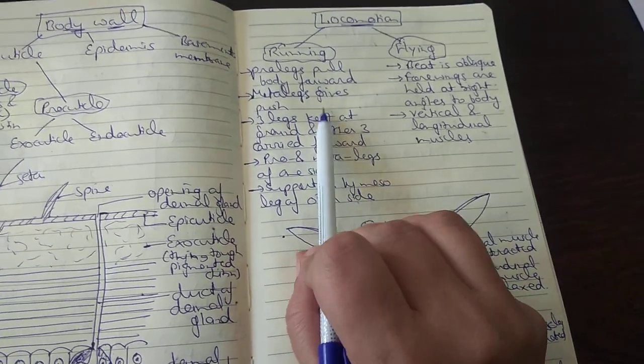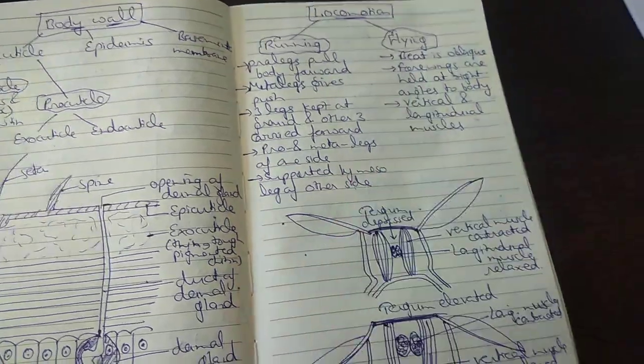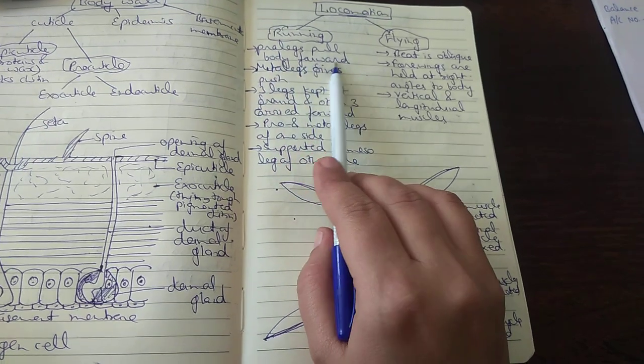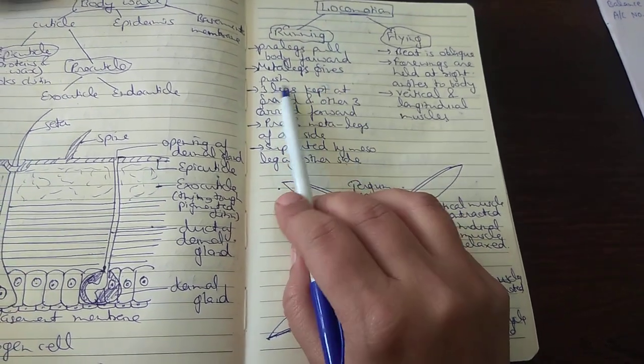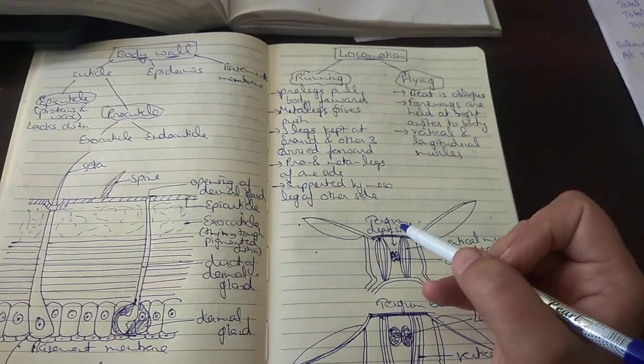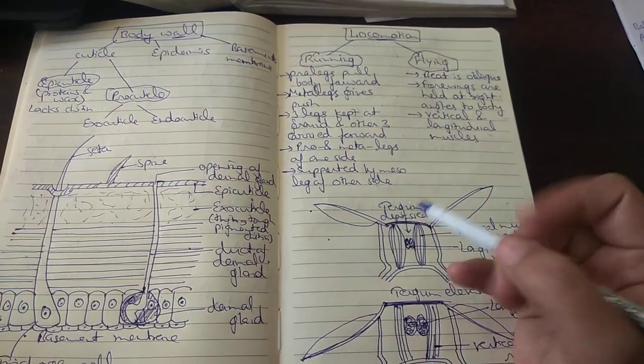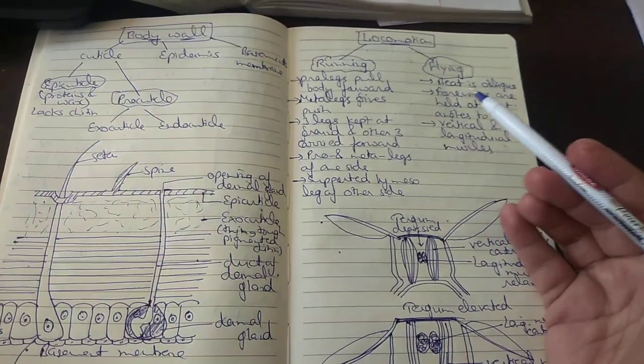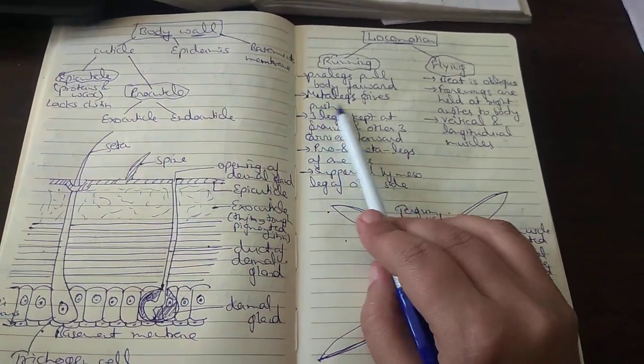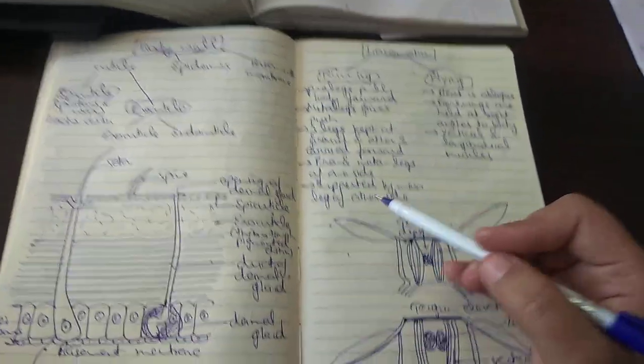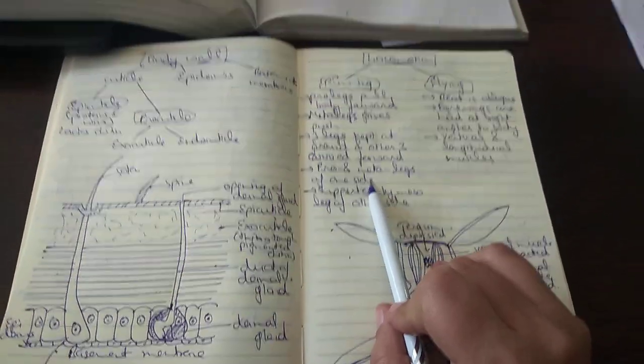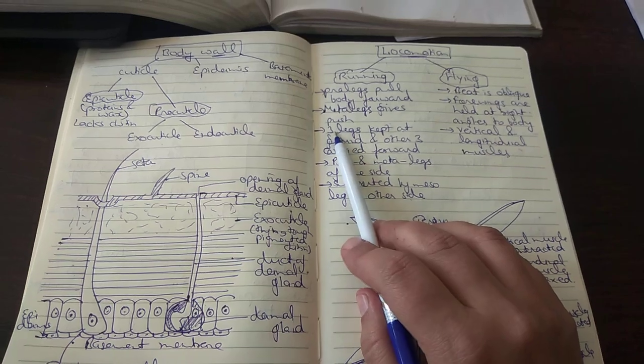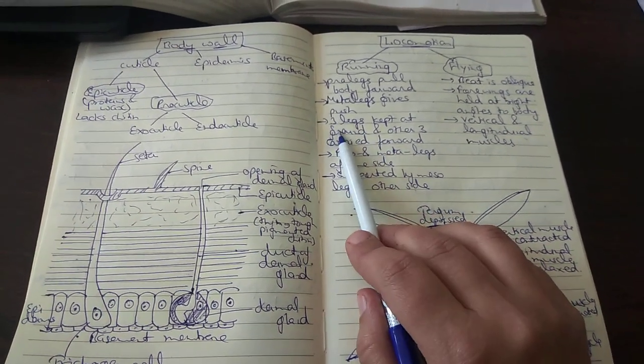Locomotion in the cockroach has a double mode: running and flying. Running is brought about by the pro legs which pull the body forward and the meta legs which push. There are three pairs of legs: pro legs, meso legs, and meta legs. These are cursorial animals which run very fast, and their legs have been modified accordingly as cursorial run legs.